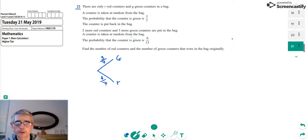We're then told that two more red counters are put into the bag and three more green counters are put into the bag. And now the probability of getting a green counter is 6 out of 13.